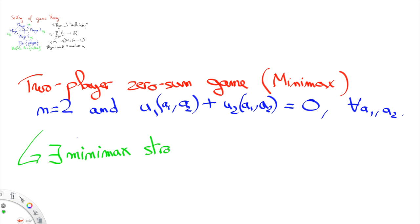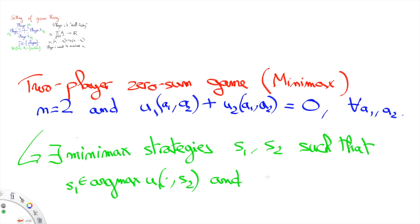It turns out that there is one key consequence of von Neumann's minimax theorem that can be generalized to this more general setting. Namely, previously we said that von Neumann proved the existence of a pair of minimax strategies.